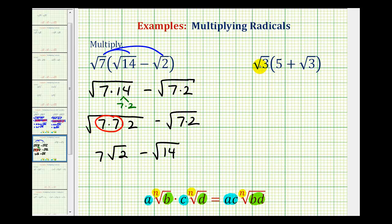In our second example, we have square root three times the quantity five plus square root three. So here we'll distribute square root three. We need to be a little careful here. Notice the five is not underneath the square root. So square root three times five is just going to be five square root three.